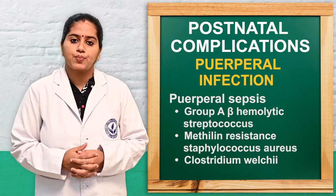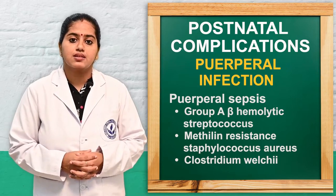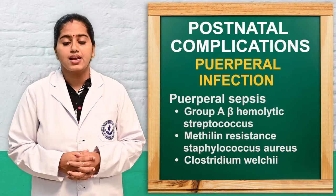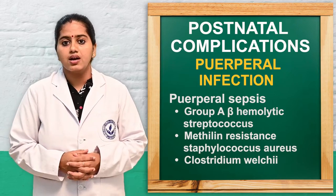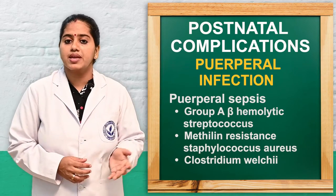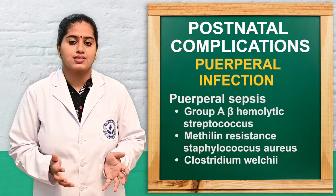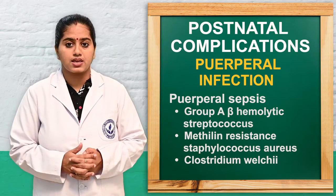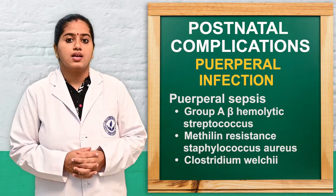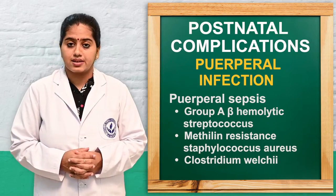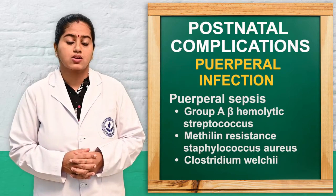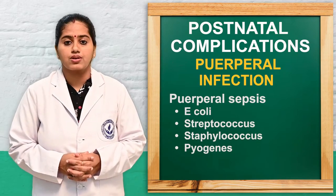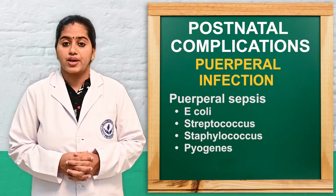The next condition is puerperal sepsis. Sepsis caused due to puerperal infections may lead to septicemia. The main causative organisms include group A beta-hemolytic streptococcus, methicillin-resistant Staphylococcus aureus, Clostridium welchii, E. coli, streptococcus, and Staphylococcus pyogenes.